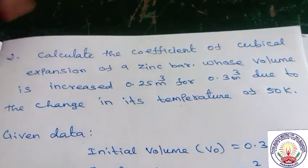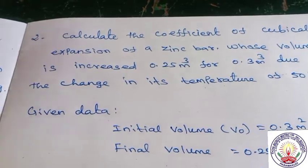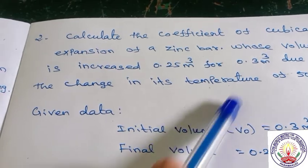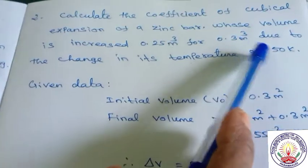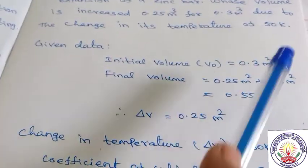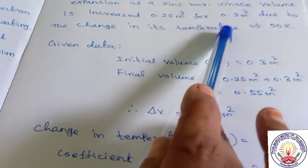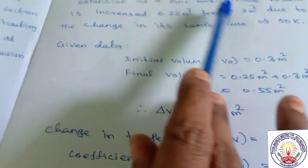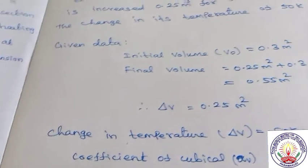Next sum: calculate the coefficient of cubical expansion of a zinc bar. Given data — volume is 1.25 meter cube, and it increases by 0.3 meter cube due to a change in temperature. Initial temperature is 50 Kelvin and change in temperature is 50 Kelvin.